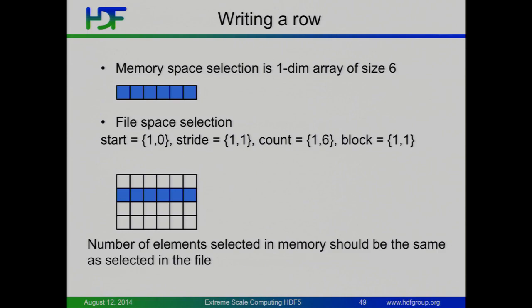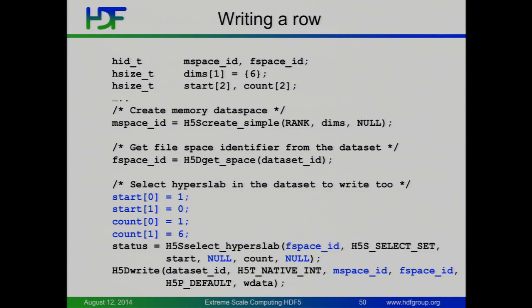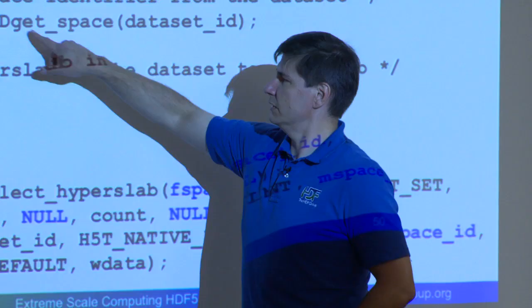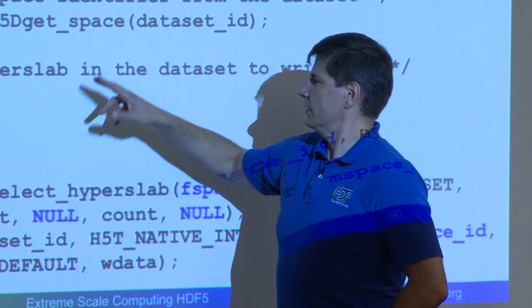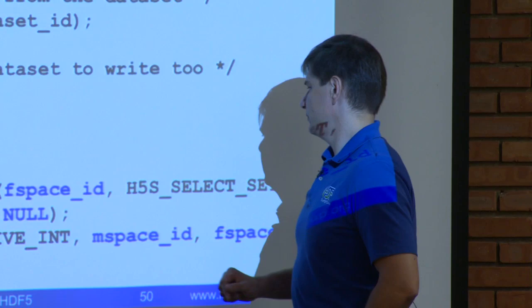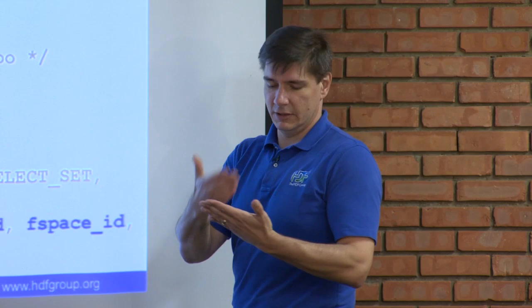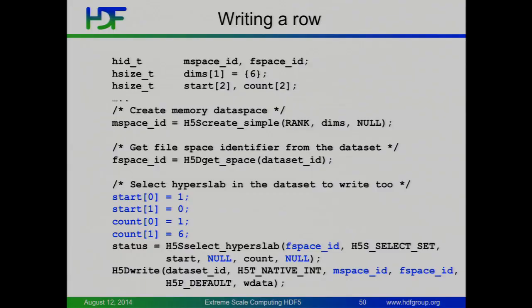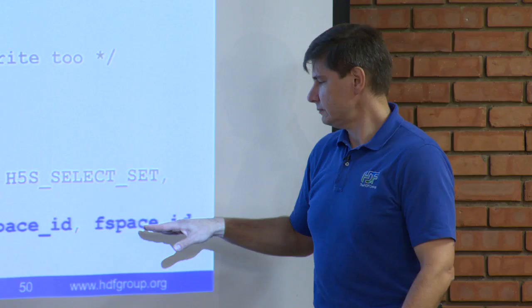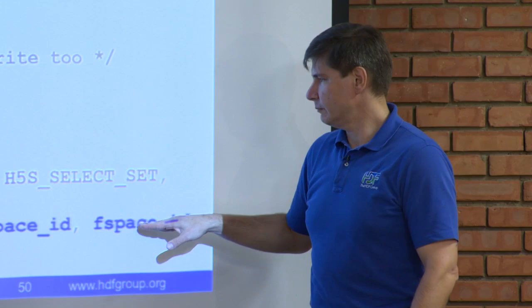The code looks something like this. In memory we have a one-dimensional thing. We pass dimensions at 6. We get the data space — the file data space from the dataset on disk — using get space. Then we select this hyperslab in the file. You can see we're passing in the file space ID. You can do all kinds of Boolean operations to build those irregular things — you start by setting a selection of blocks, and then you can OR, AND, XOR different blocks into them. In this case, we're passing in a very simple, very regular single block. We pass in the memory space, which defaults to the all-selection of the whole memory buffer. The file space has a subset selected, and they're the same number of elements — so we get that output to the file, writing this one row. This is basically starting to set you up for parallel I/O — each process has a subset of the array we're going to put on disk.